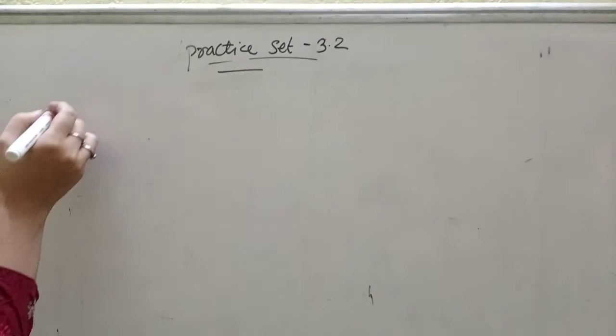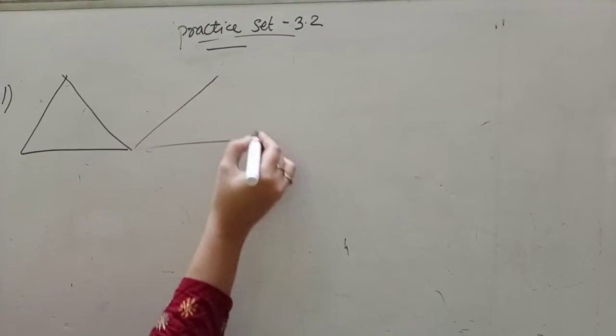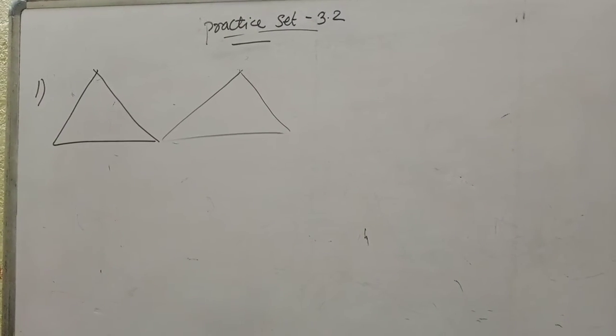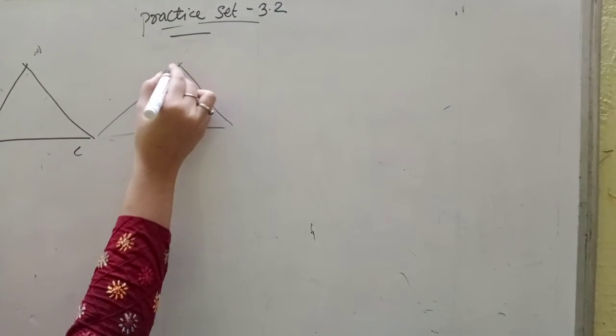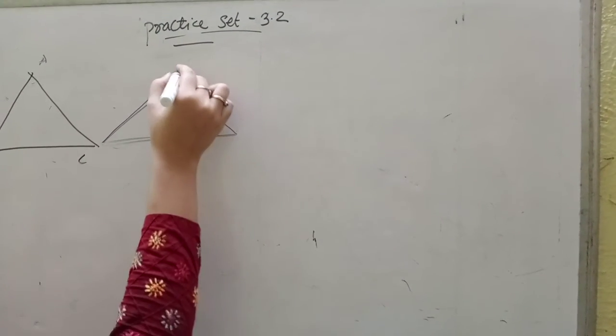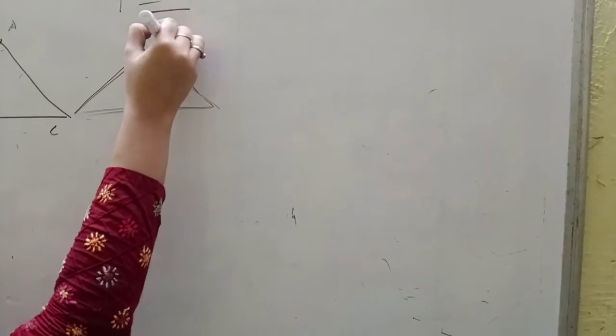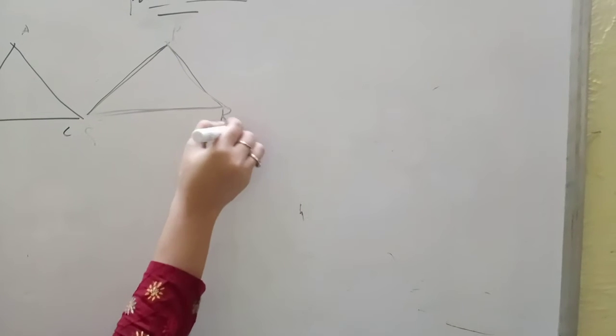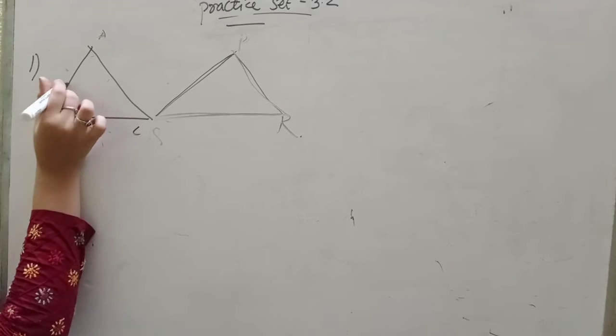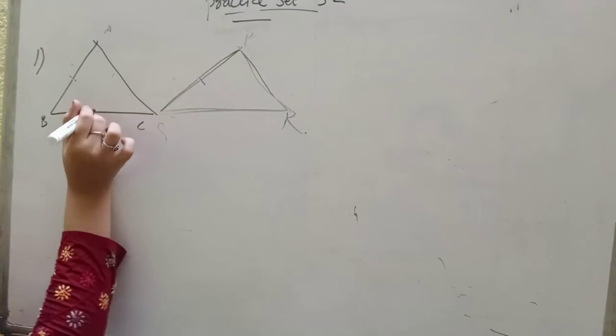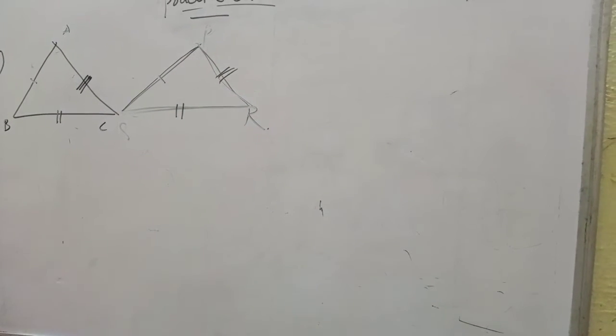In each of the examples given below, a pair of triangles is shown. Equal parts of triangles in each pair are marked with the same sign. Observe the figures and state the test by which the triangles in each pair are congruent. The first question: two triangles are given, triangle ABC and triangle PQR. In this, marked the way, this one is similar to this one, this one to this one, and this one with this one.